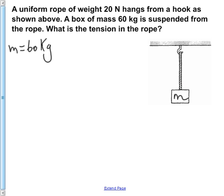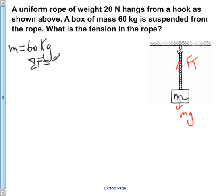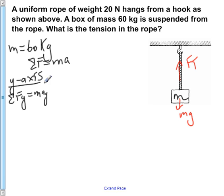The first thing we're going to do is draw the free body diagram for the block hanging on the rope. We know that its weight is pulling down — Mg is down — and the tension is directed upwards in the rope, with no x component. Writing Newton's second law, net force equals ma. For the y-axis, net Fy equals ma_y. We're not accelerating up or down, so a_y equals zero, and we can cancel that out.